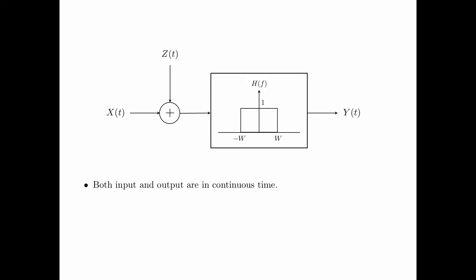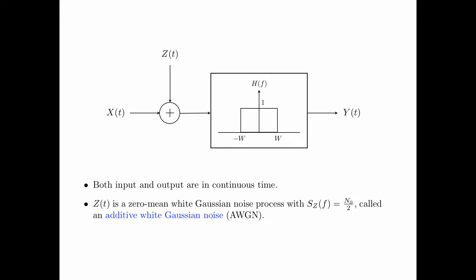In this channel model, both the input and the output are in continuous time. Z of t is a zero-mean white Gaussian noise process, with the power spectral density denoted by s_z of f equal to N_0 divided by 2, where f is from minus infinity to infinity. This noise process is called an additive white Gaussian noise, or AWGN.